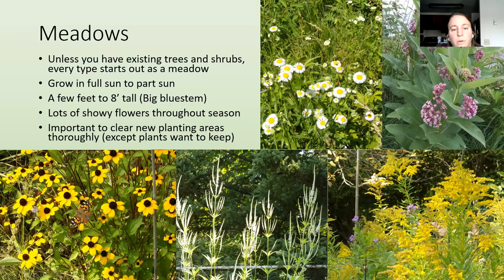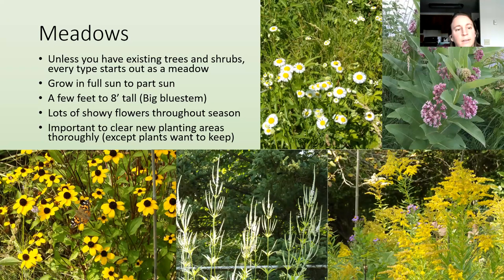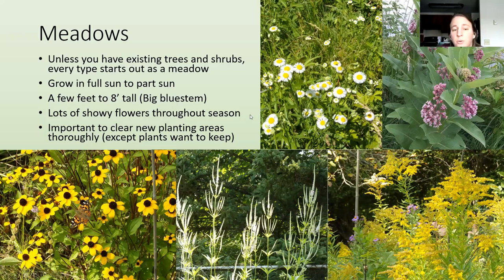Meadows are one of the earliest successional habitat types you're going to plant. Unless you have existing trees and shrubs, every type you plant is going to start out as a meadow. They usually grow in full sun to part sun and can grow in dry to wet soil. They can grow from a few feet tall to eight feet tall — like big bluestem, a very tall native grass. Meadows typically have lots of showy flowers throughout the season. When starting, it's important to clear the planting area thoroughly before you put in new plants to avoid weed pressure right from the start.